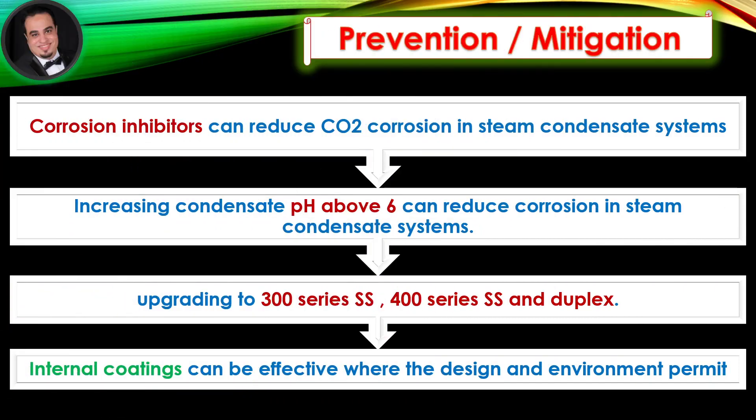Prevention and mitigation: Corrosion inhibitors can reduce CO2 corrosion in steam condensate systems. Increasing condensate pH above 6 is recommended. Upgrading to 300 series, 400 series, and duplex stainless steel is effective. Internal coatings can be effective where the design and environment permit.